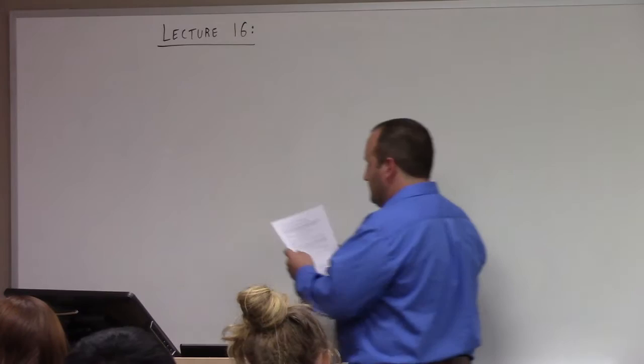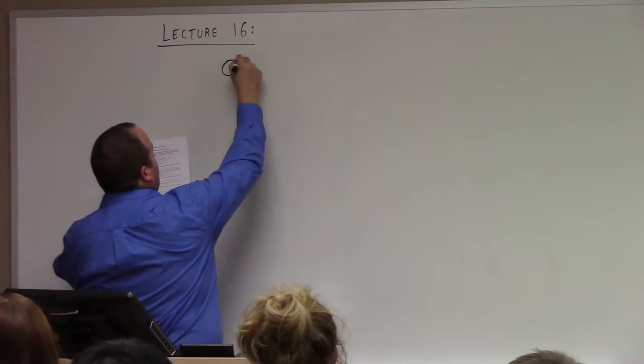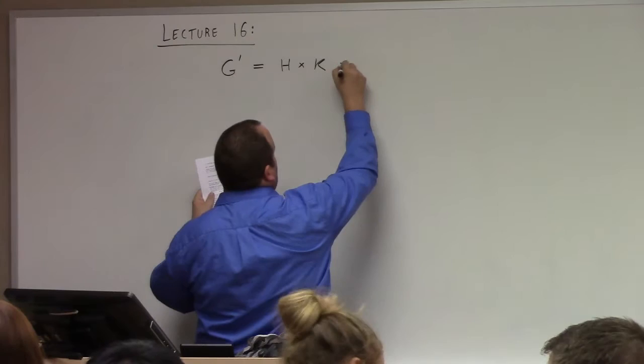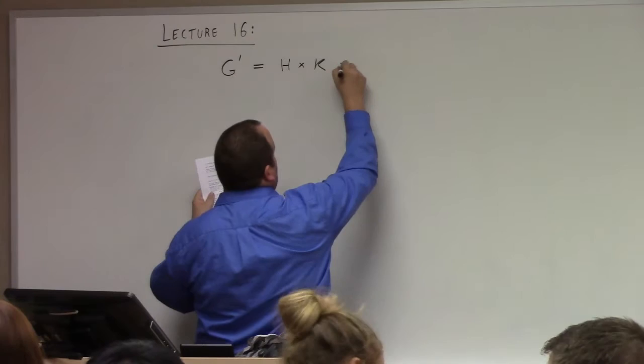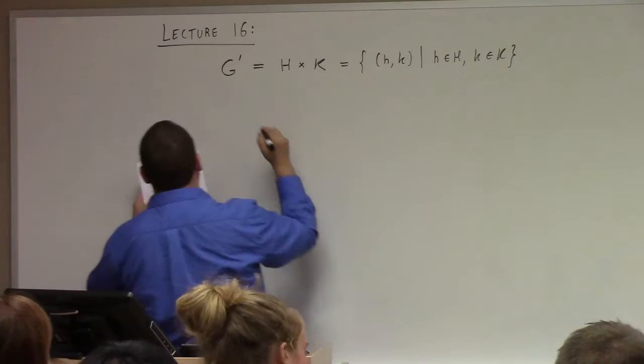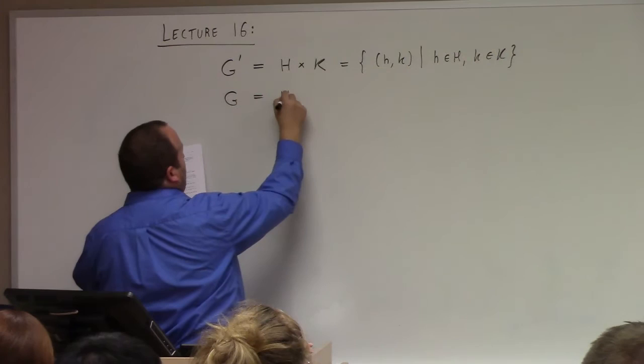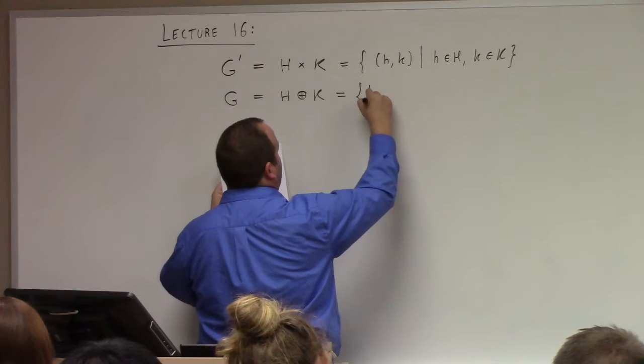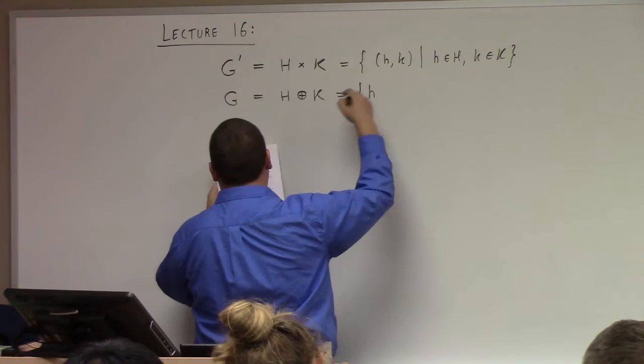So just to set the notation: for us, if we say G' equals H cross K, this is the Cartesian product of a group H and a group K. Specifically, this is the set of tuples (h, k) such that h is from H and k is from K. In contrast, we define G to be H direct product — or direct sum, we use the same symbol for both.